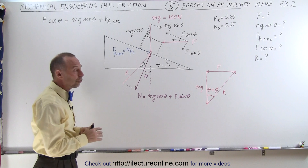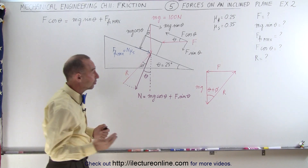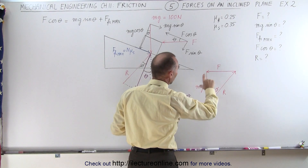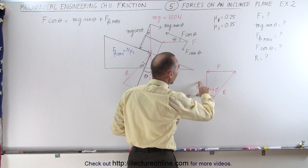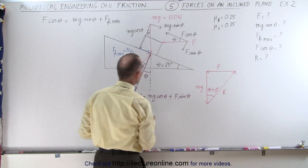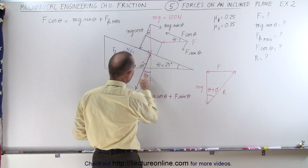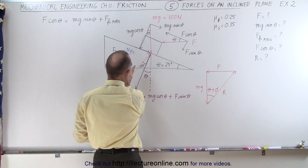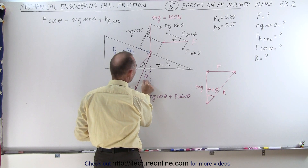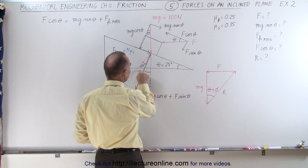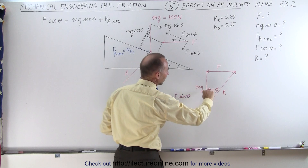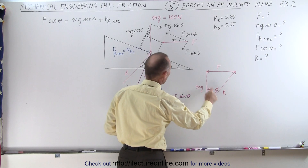Notice we still have a nice triangle where we have the applied force, the weight of the block, and the reaction force. But in this case, notice that the angle between the reaction force and the vertical is equal to theta plus an additional angle phi, so this angle becomes the sum of theta plus phi.